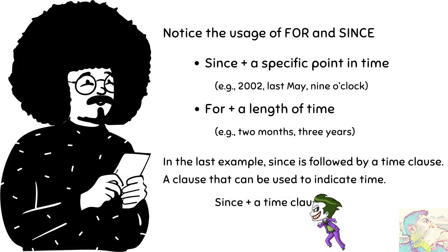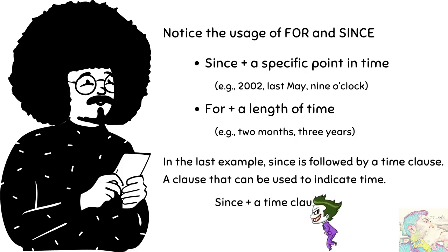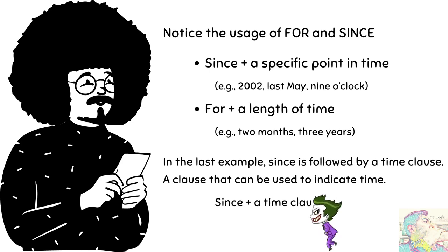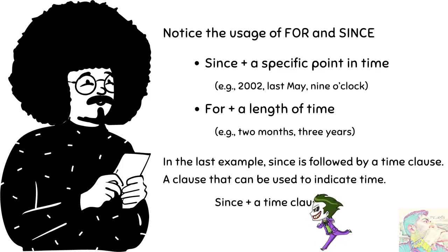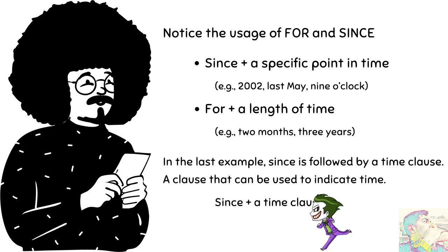You can see the difference between since and for. Since is followed by a specific point in time — for example: since 2020, since May last, since 9 o'clock, since 2 hours ago — that is specific. Sedangkan kalau 'for', diikuti dengan duration atau lamanya waktu, misalnya: for 2 hours, for 2 months, for 3 years, for 2 decades, even for 5 seconds — jadi memang ada jangka waktu.